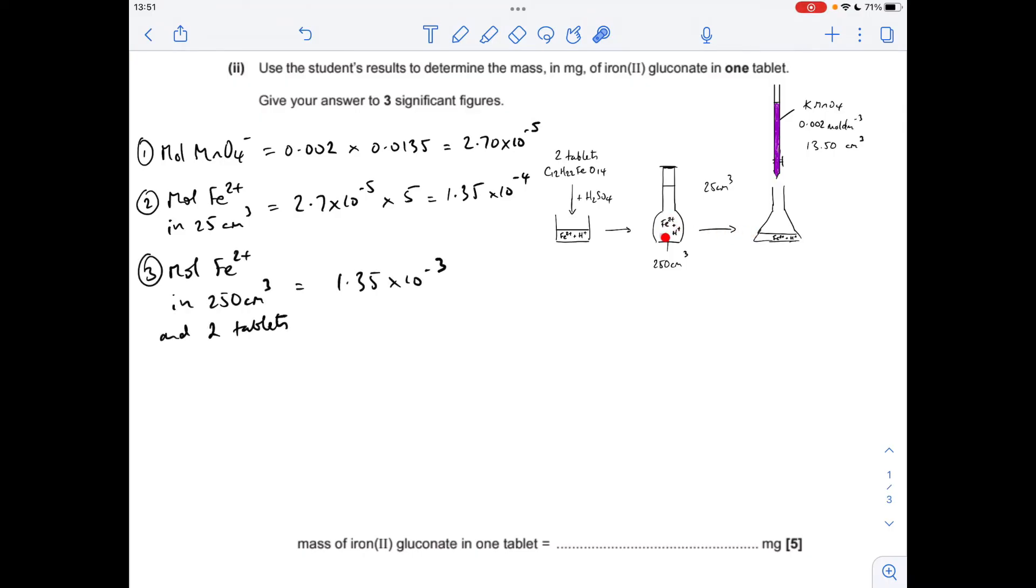So multiply by 10 to get the moles of Fe2+ that are in the 250 cm cubed volumetric flask. So that gives us 1.35 times 10 to the minus 3. But just remember where have they come from? They've come from that and therefore the two tablets. So that is also the moles of Fe2+ in the two tablets.